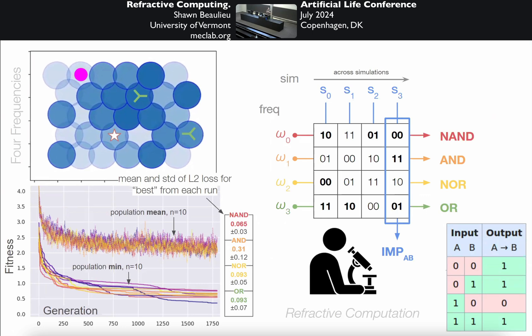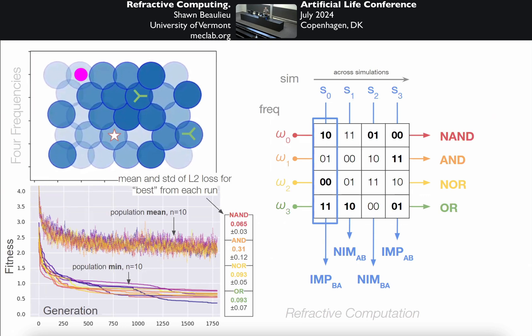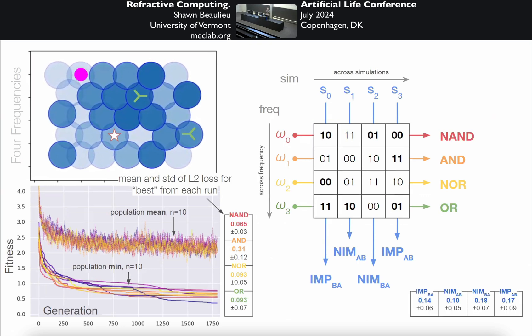We call this refractive computation. If you look across the operations that were selected for by evolution, that is the operations that compute NAND, AND, NOR, and OR, you can pull out additional computations. We can do this with all four simulations, defining a unique parallel gate for each one. And all of these are universal logic gates. We give the mean and center deviation for the best performing materials in evolution in the bottom right.